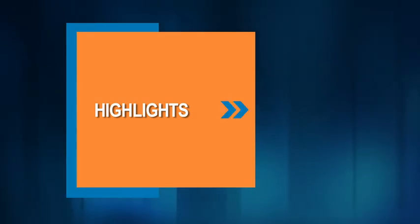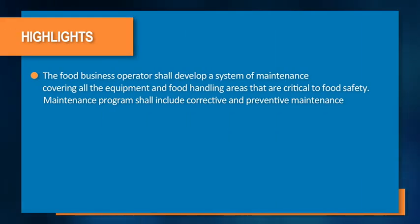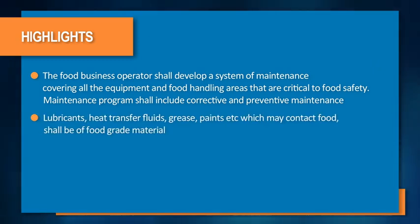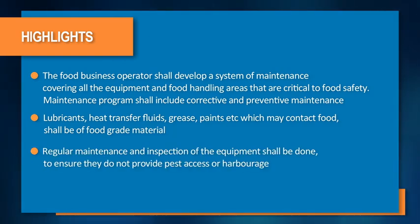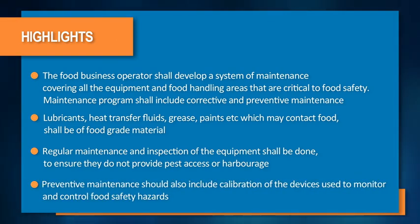The main points to remember: the food business operator shall develop a system of maintenance covering all equipment and food handling areas critical to food safety. The maintenance program shall include corrective and preventive maintenance. Lubricants, heat transfer fluids, grease, paints, etc., which may contact food, shall be of food-grade material. Regular maintenance and inspection of equipment shall be done to ensure they do not provide pest access or harbourage. Preventive maintenance should also include calibration of devices used to monitor and control food safety hazards.